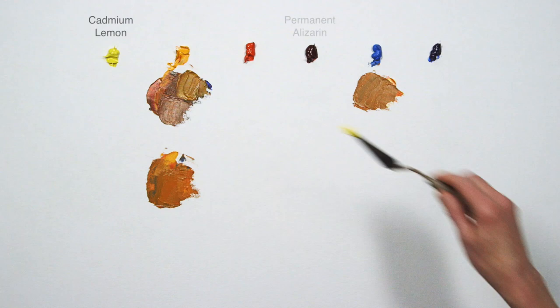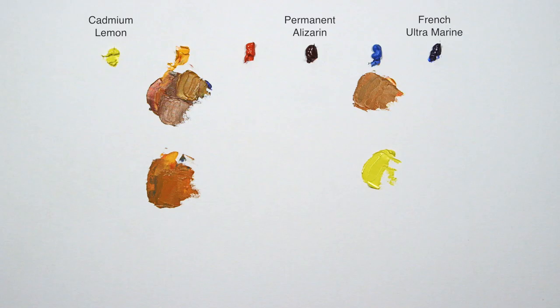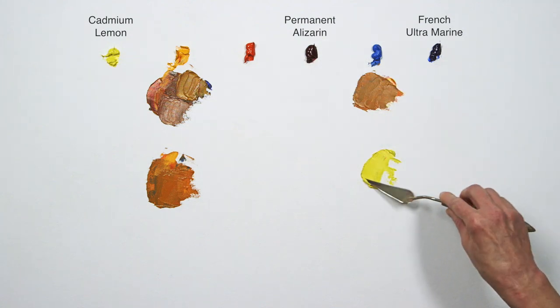Or Cadmium Lemon, Alizarin, and Ultramarine. By varying the amounts of each pigment, I can modify the hue of the brown as well as its value.